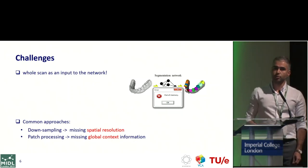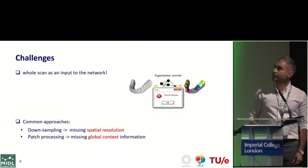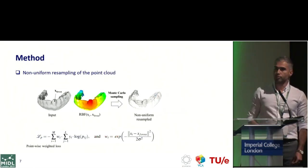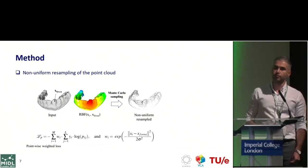Patch processing also misses the global context, and here there is a high dependency between tooth labels and their position on the dental arch. So we propose to use non-uniform sampling based on Monte Carlo sampling, and we adapt the point-wise cross entropy loss to be adaptive to this non-uniform sampling.